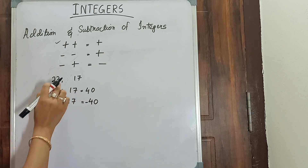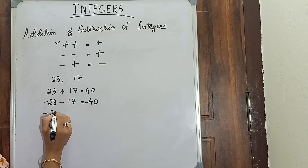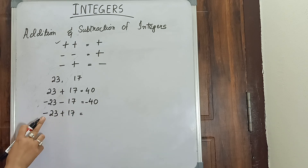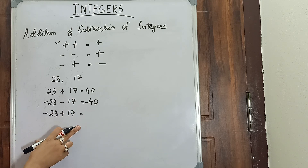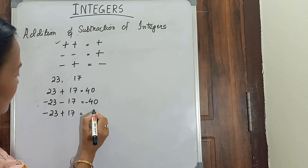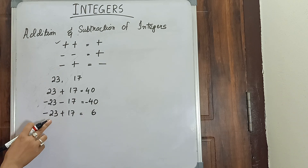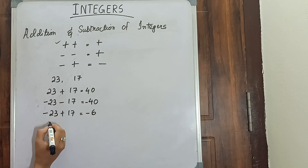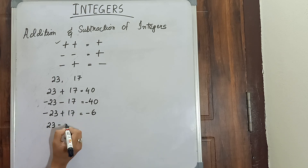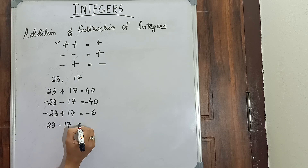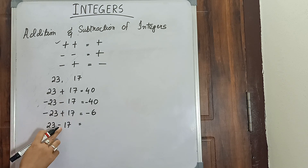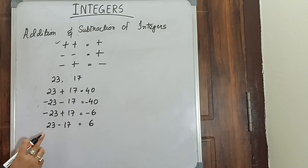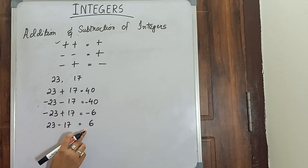Now for minus and plus: minus 23 plus 17. Since the signs are different, we do 23 minus 17 which is 6, then put the sign of the bigger number — which is minus — giving minus 6. Similarly for 23 minus 17: plus and minus is minus, so we do 23 minus 17 equals 6, and the sign of the greater number is plus, so the answer is positive 6.